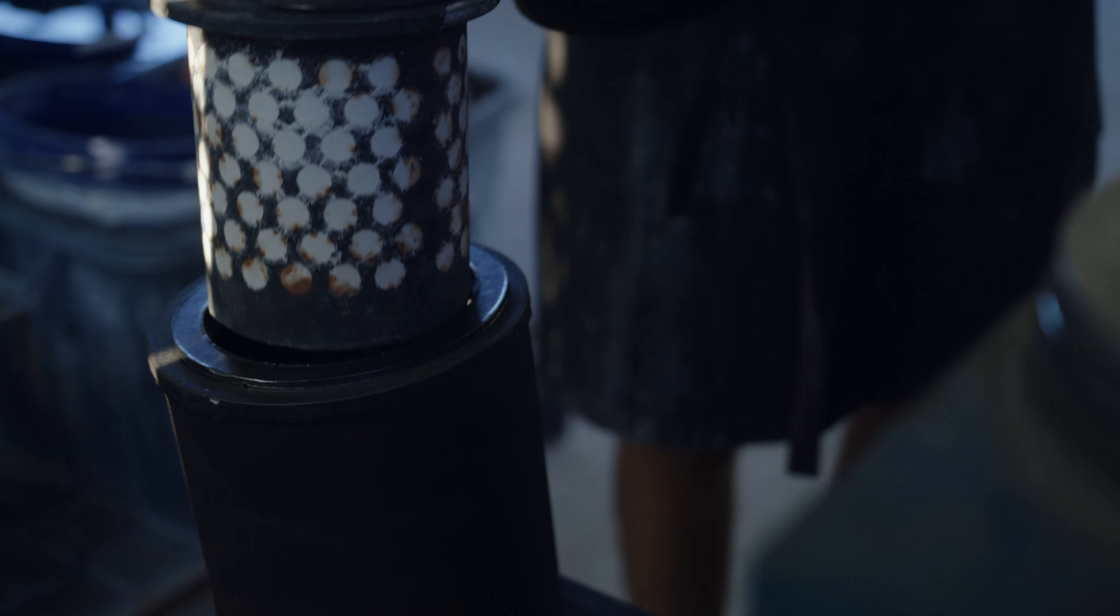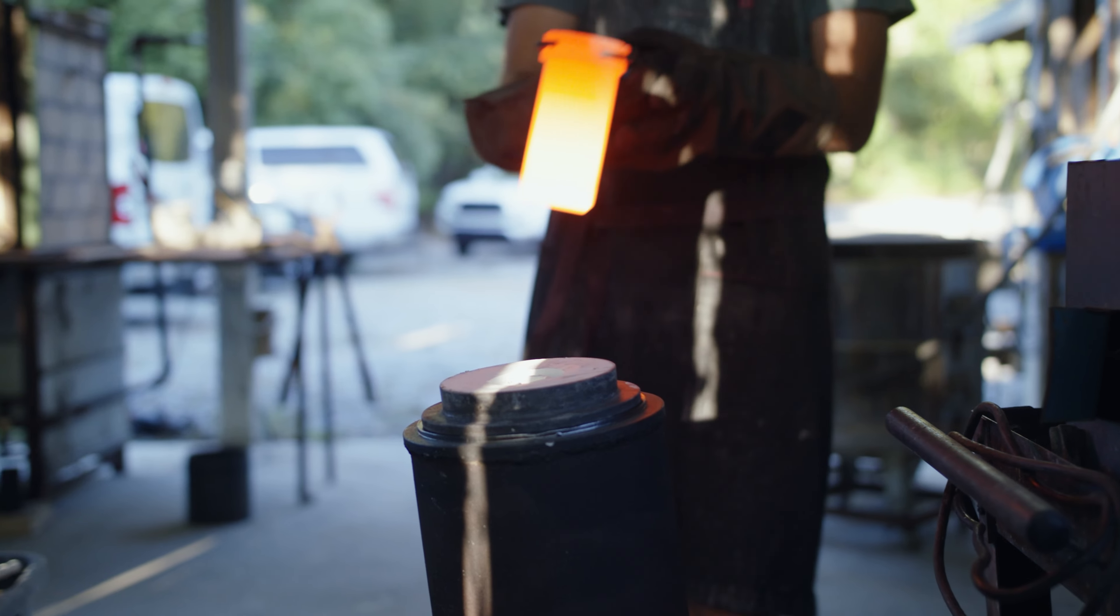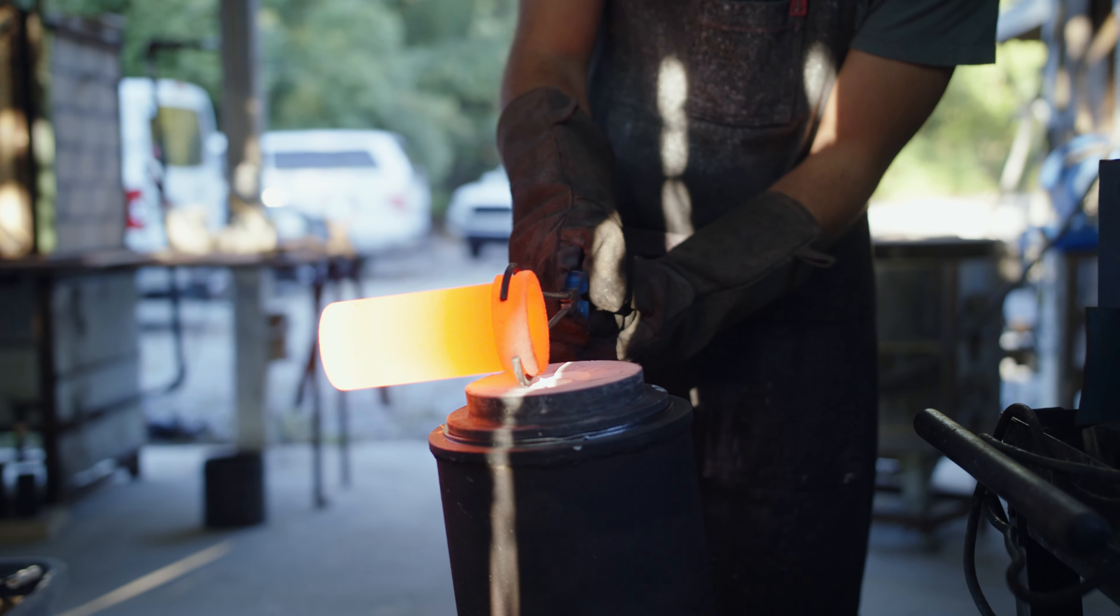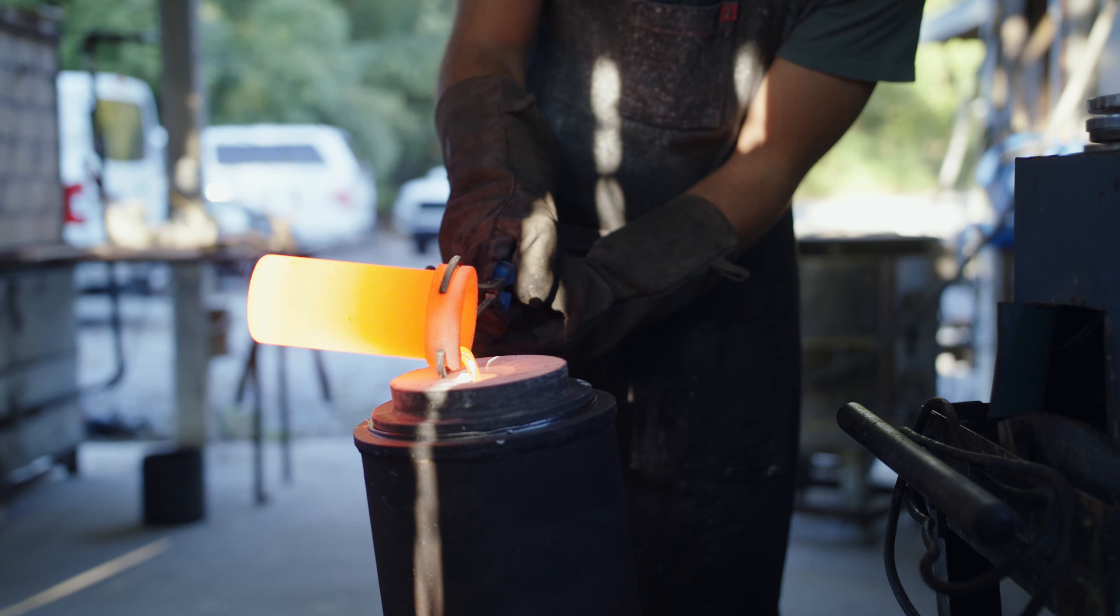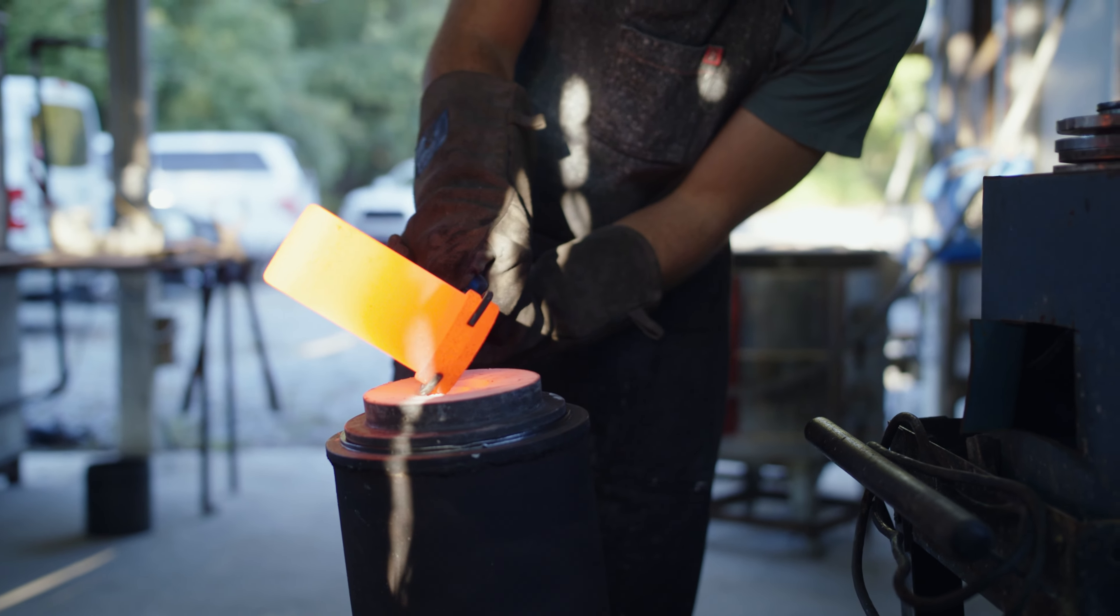Once the mold heats up to a high temperature, the molten metal is poured into the hole left by the center sprue or trunk. From there, the rest of the tree is filled with molten metal.